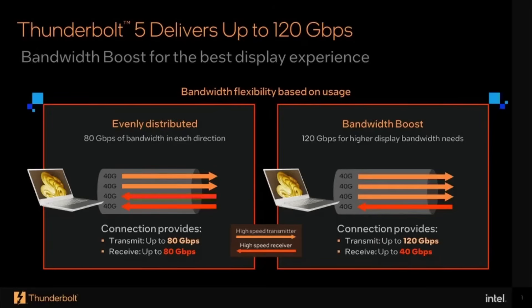Thunderbolt 5 basically makes all those optional things mandatory. The 80 gigabits per second, which is optional with USB 4 v2, is required with Thunderbolt 5 — 80 gigabits in both directions. There's also a bandwidth boost mode where three lanes are for output and one lane is for input, giving you transmit speeds up to 120 gigabits per second and receive up to 40 gigabits per second, which is brilliant for video work.